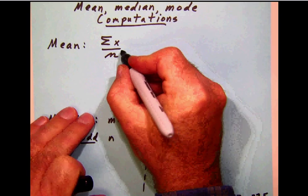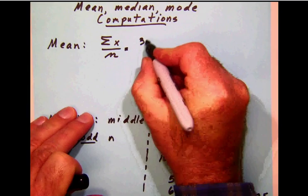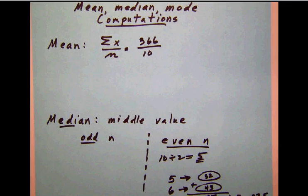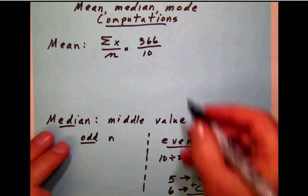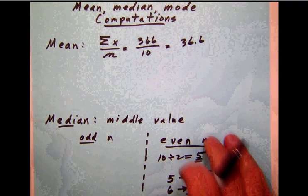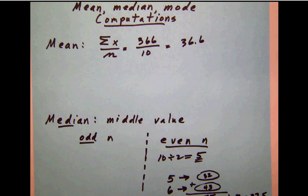So 366 divided by 10 because 10 is the number of items on our list. That division is easy to do and that's going to be 36.6. So that's going to be the mean of our calculation. So let's go ahead and put that in.